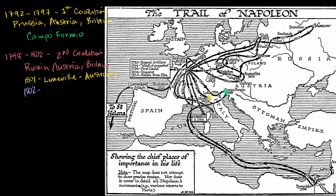Then Napoleon had the Treaty of Amiens with the British in 1802, which really ended the coalition. Austria was out of it, Russia had participated but didn't really gain or lose anything, and the United Kingdom essentially experienced war fatigue. But they weren't tired for long — because in May of 1803, the Third Coalition began.